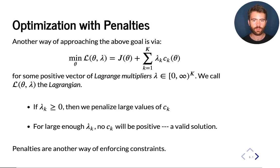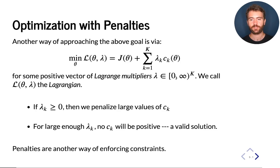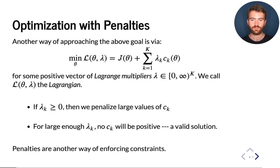I'm going to refer to these terms by certain names. The lambdas — one lambda per constraint, each non-negative, so lambda is a vector of K non-negative numbers — are called Lagrange multipliers. The function consisting of our objective plus this penalty term is called the Lagrangian function. These are standard concepts in optimization.